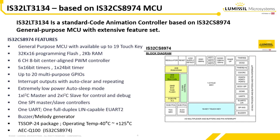IS32LT3134 is a standard code animation controller designed to be easily configured with no programming required to achieve rich animation capabilities. The product is based on the IS32CS8974 general purpose MCU, which has a more extensive feature set. When looking at system level requirements and considering compatibility, for large-scale applications when the volumes and business case are there, it is possible to configure the solution differently in a short time with assistance from Lumisil's application team.